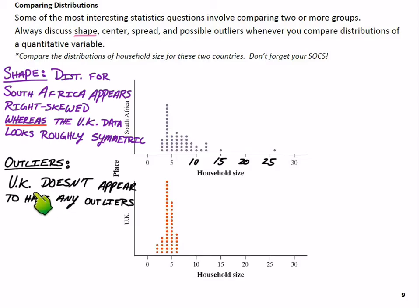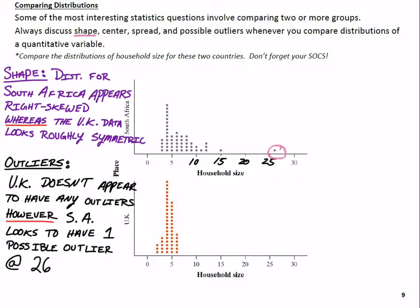Okay, so we've compared the shapes. We can go ahead and talk about outliers because I think there are some present within that South Africa one. For outliers, the UK doesn't appear to have any outliers, right? That's pretty much a tight grouping for the whole distribution. However, and there's that comparative language, however, SA, South Africa abbreviation, looks to have one possible outlier out here. And if we're claiming that this South Africa distribution might have an outlier, we need to say which one we're talking about.